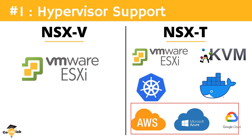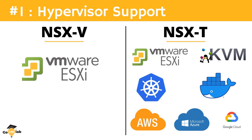NSX-T also has support for public cloud workloads such as AWS, Azure, and Google Cloud. Products like VMware Cloud on AWS, Azure VMware Solution, Google Cloud VMware Engine, Oracle Cloud on VMware, and IBM Cloud on VMware are all hybrid cloud solutions tightly integrated with NSX-T. NSX-T is the backbone of all these hybrid cloud offerings from VMware. That's one of the major differences between NSX-V and NSX-T.